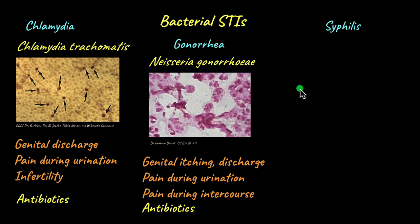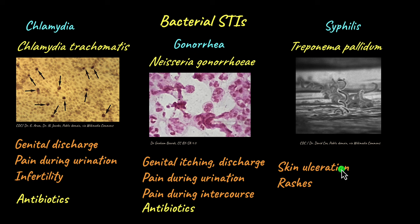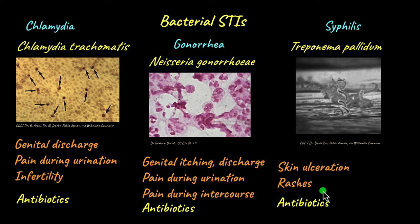Another bacterial infection is syphilis, caused by Treponema pallidum. If left untreated, syphilis is quite fatal. Primary symptoms occur two to six weeks after infection and include painless skin lesions or ulcerations in and around the genital areas. Secondary infection begins four to ten weeks after infection, causing reddish-pink, non-itchy rashes found on the trunk, hands, legs, and even the palms. Syphilis can also be cured with antibiotics.